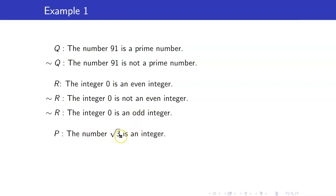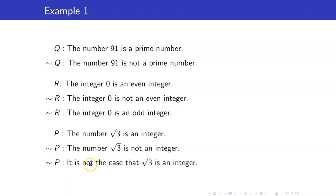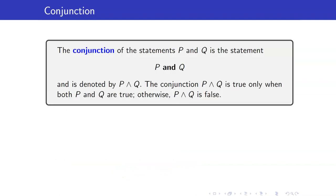Next, 'The number square root of 3 is an integer.' Its negation is 'The number square root of 3 is not an integer,' or you can also say 'It is not the case that square root of 3 is an integer.' So let's go to our second logical connective: conjunctions. The conjunction of the statements P and Q is the statement 'P and Q,' denoted by the conjunction symbol.